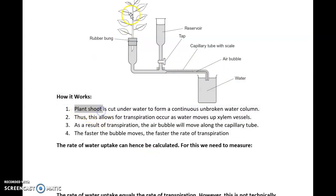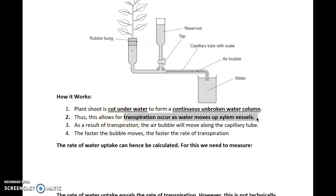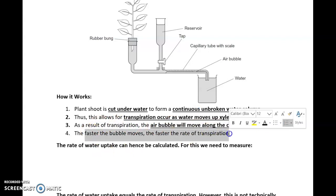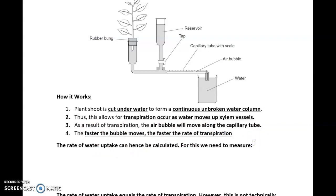So how does a potometer work? Well, the plant shoot is cut underwater. Once you're cutting underwater, obviously to prevent air coming in, that forms a continuous unbroken water column. Thus, this allows transpiration to occur as water moves up the xylem vessels. As a result of transpiration, the air bubble will move along the capillary tube. Because of the difference in pressure, it will be dragged along. The faster the bubble moves, the faster the rate of transpiration. That makes sense. Obviously, the faster the rate of transpiration—i.e., the faster that water moves through the xylem and transpires at the leaf surface—will mean that the time in which a pressure difference is created will be faster.